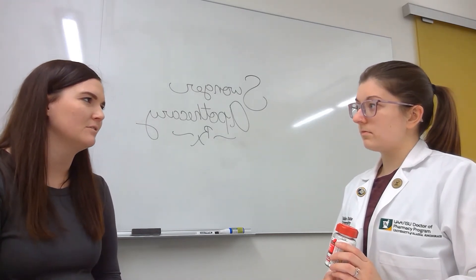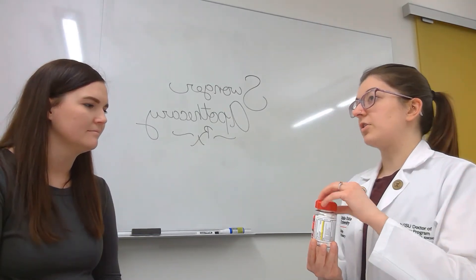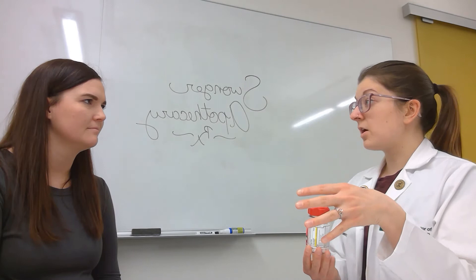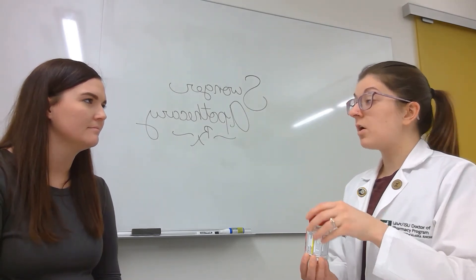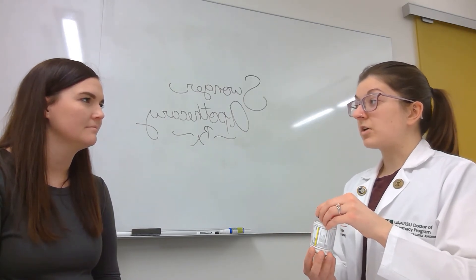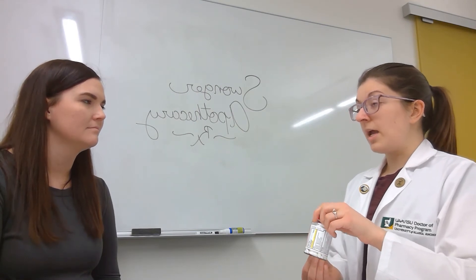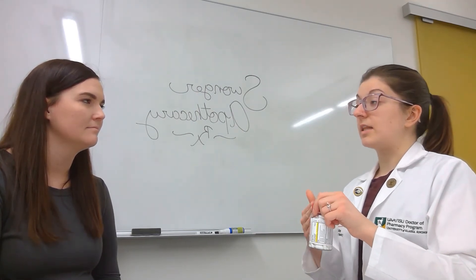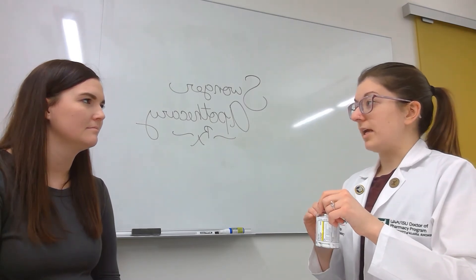Yeah, sure. So acetaminophen comes in different strengths, so whatever strength you do get off the counter, you just want to make sure to follow the directions. My recommendation for you would be to start with the lowest dose, which would be 650 milligrams every four to six hours. You're going to want to take this by mouth for about three days.